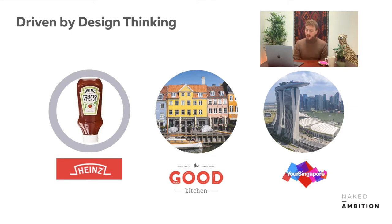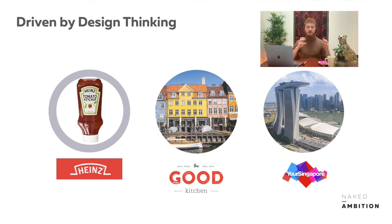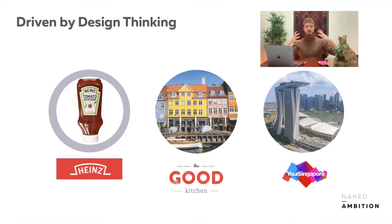The third example is the Singaporean government, who hired IDEO to redesign a lot of different government processes. One of them was their employment pass application, because that process was a mess — there were 13 steps that people had to go through, they had to deliver documents, go to different buildings to sign up, go through an online portal, all these different ways of doing it. They wanted to redesign this process.